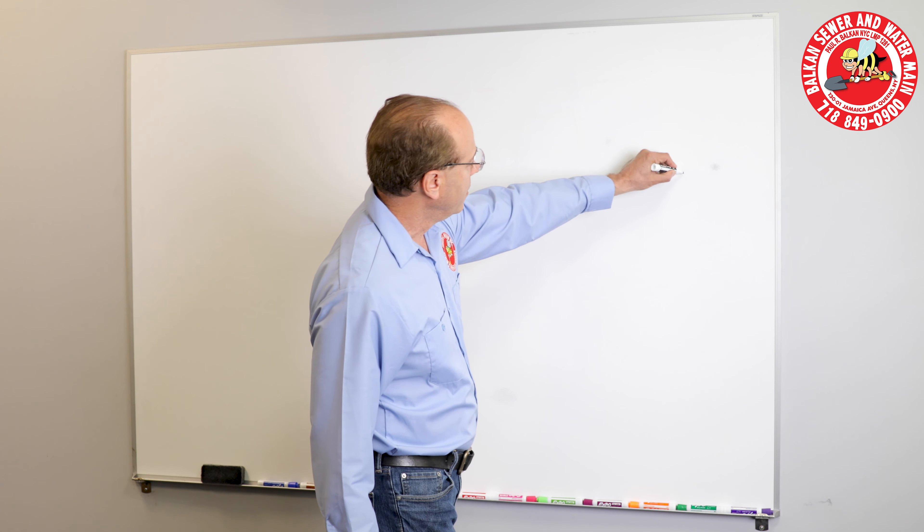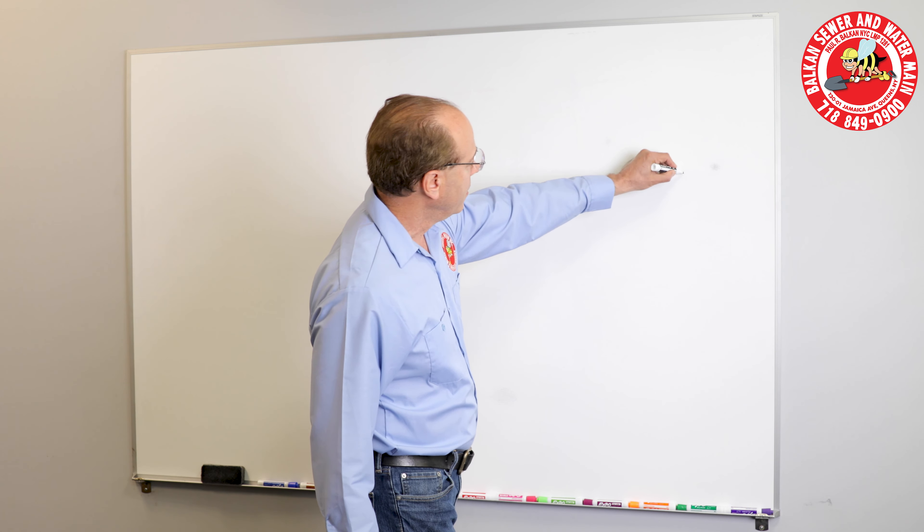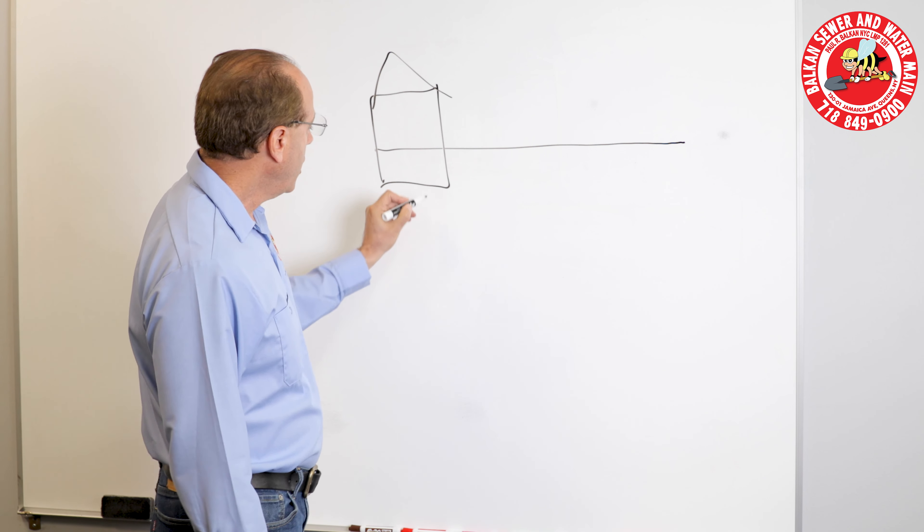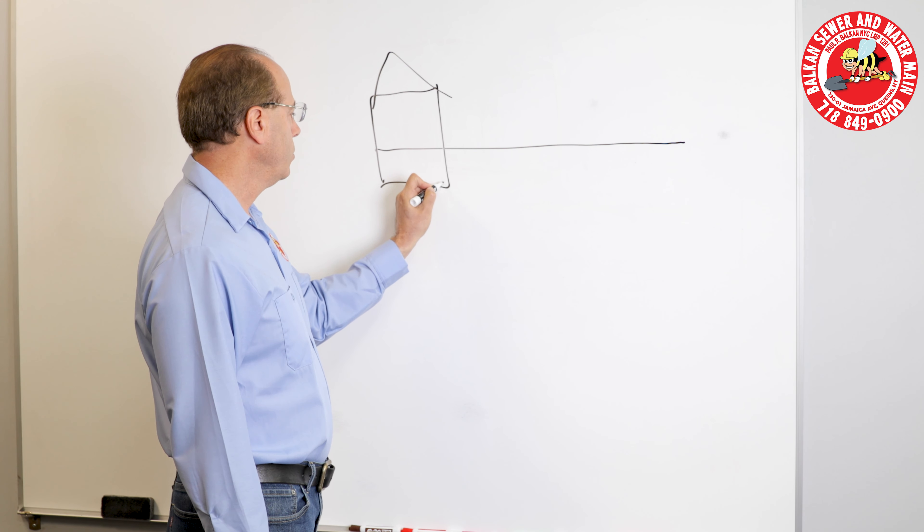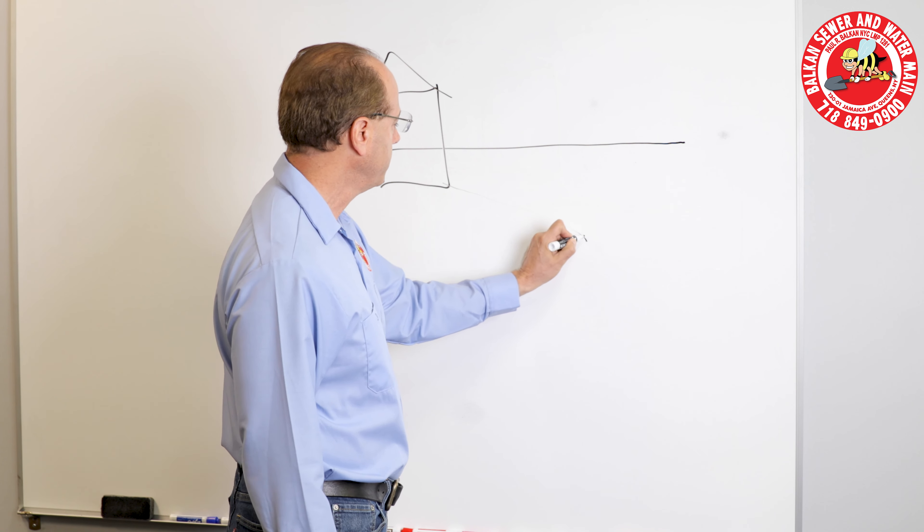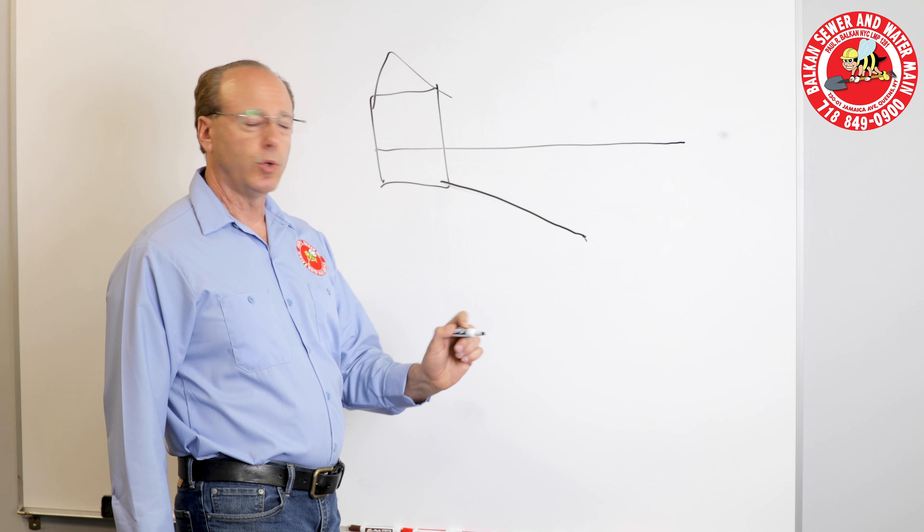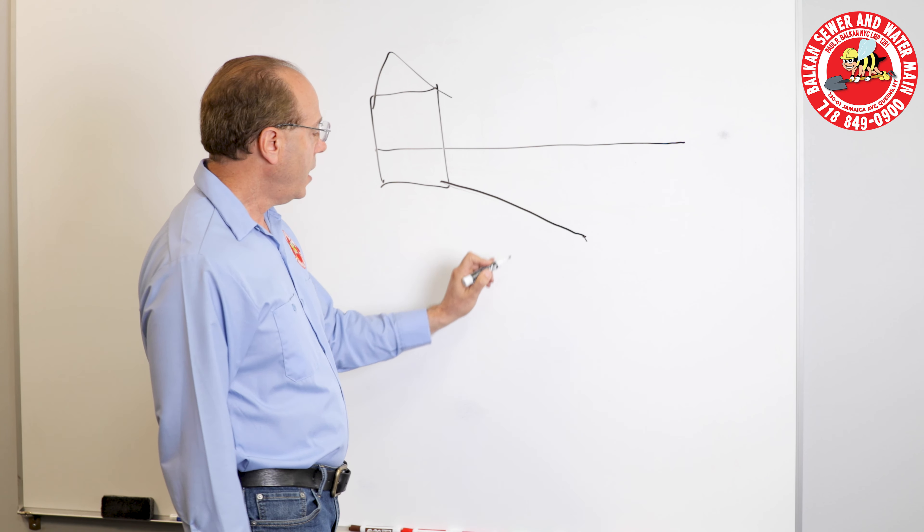So first of all, if this is ground level and this is your home, this is your basement, a sewer is allowed to be built with a certain degree of pitch, usually one-to-two to one-to-four in pitch. However,